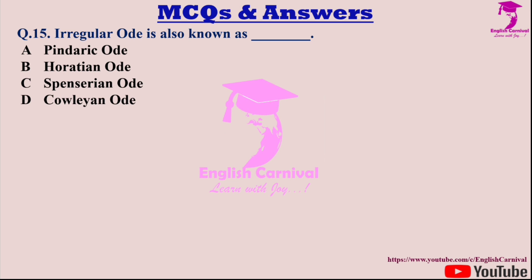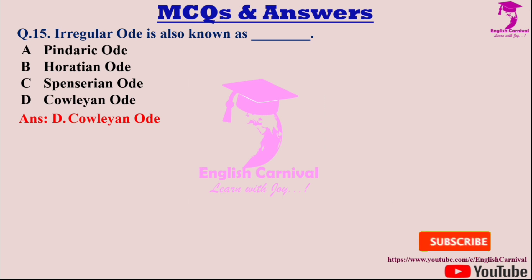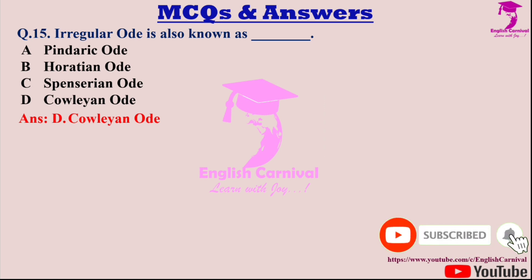Question fifteen: Irregular Ode is also known as — dash. Options are A: Pindaric Ode; B: Horatian Ode; C: Spenserian Ode; and D: Cowleian Ode. Correct answer is D — it is also known as the Cowleian Ode.